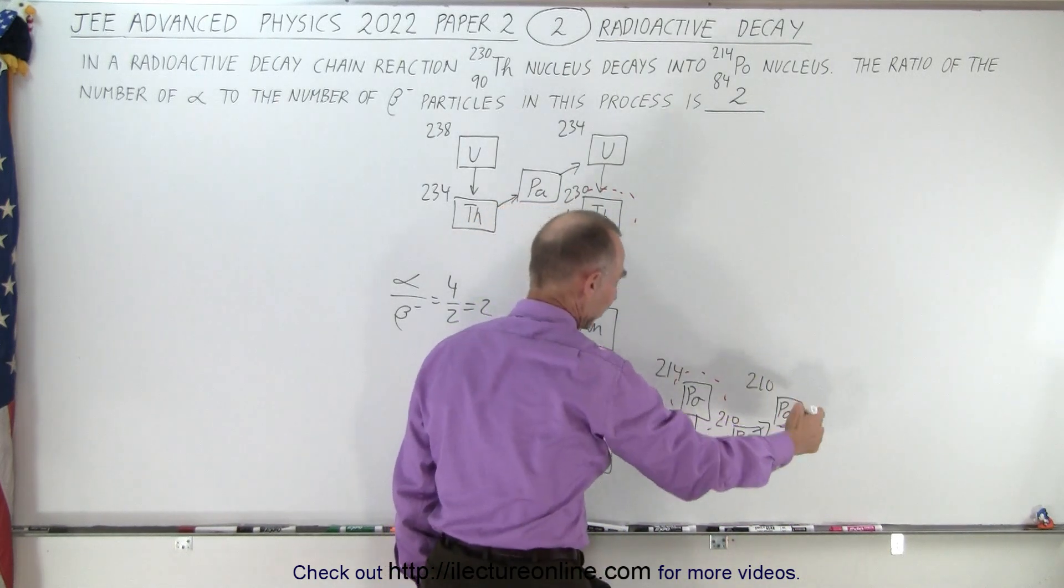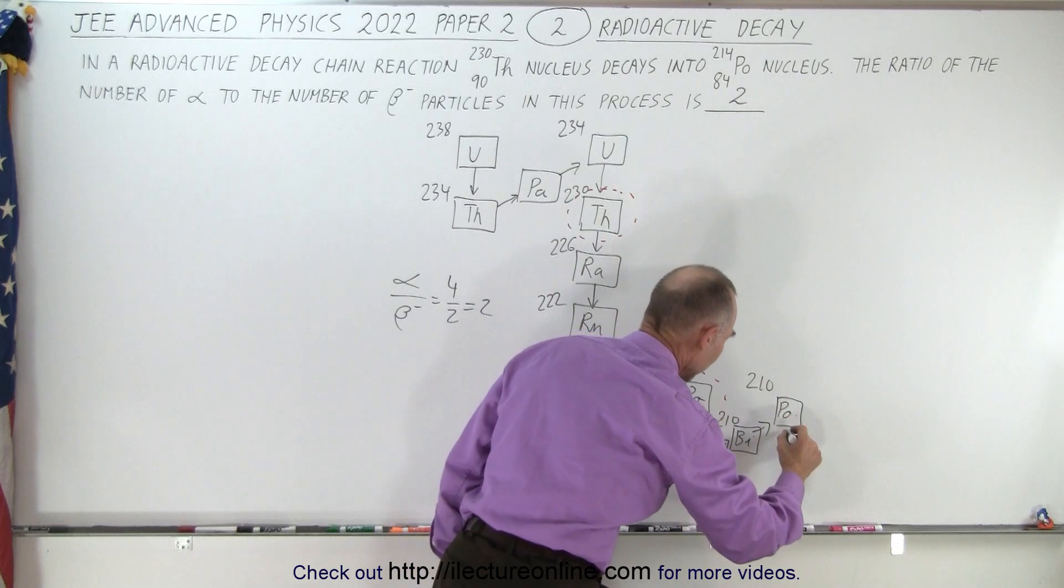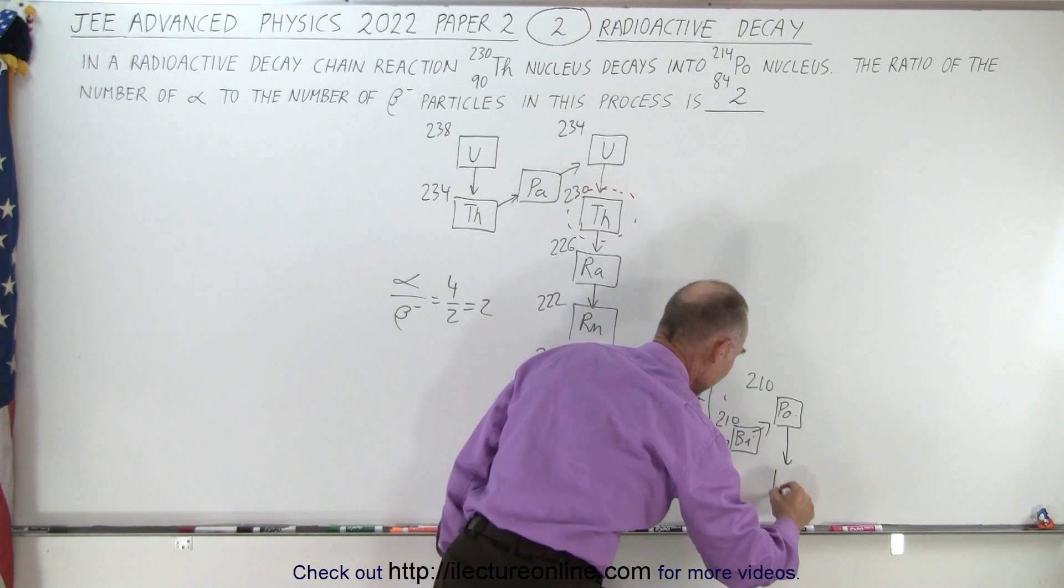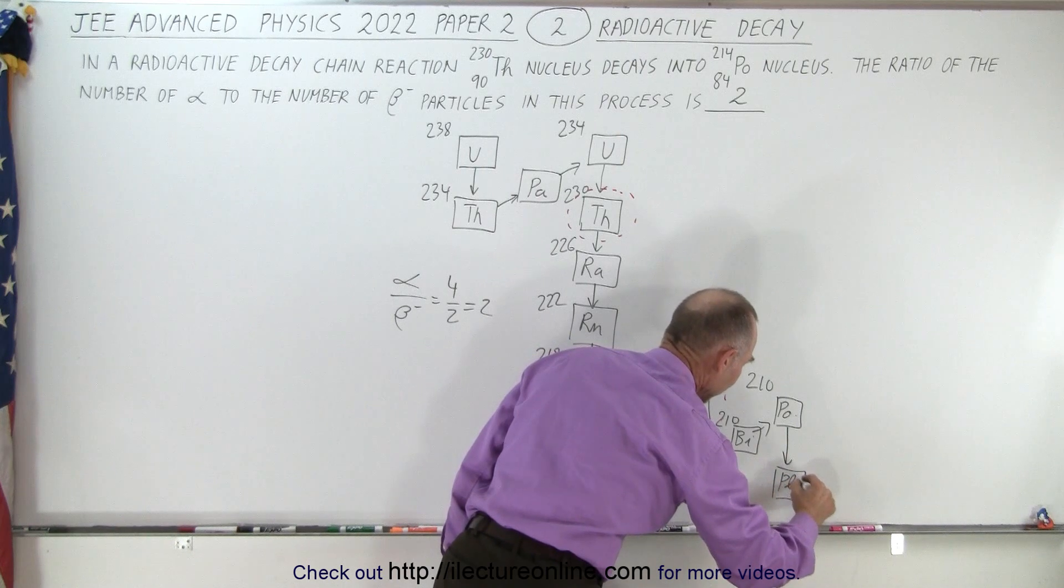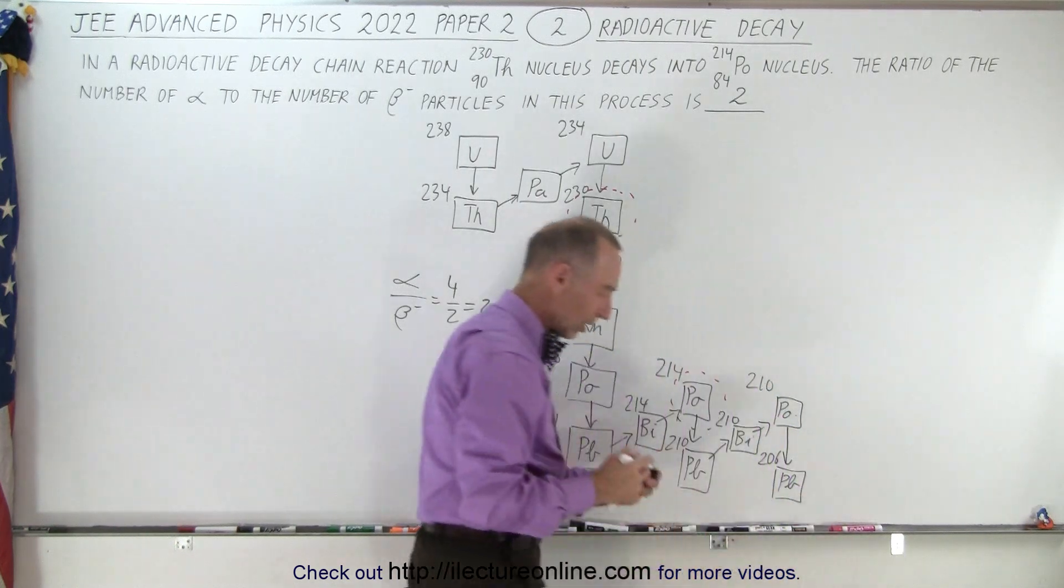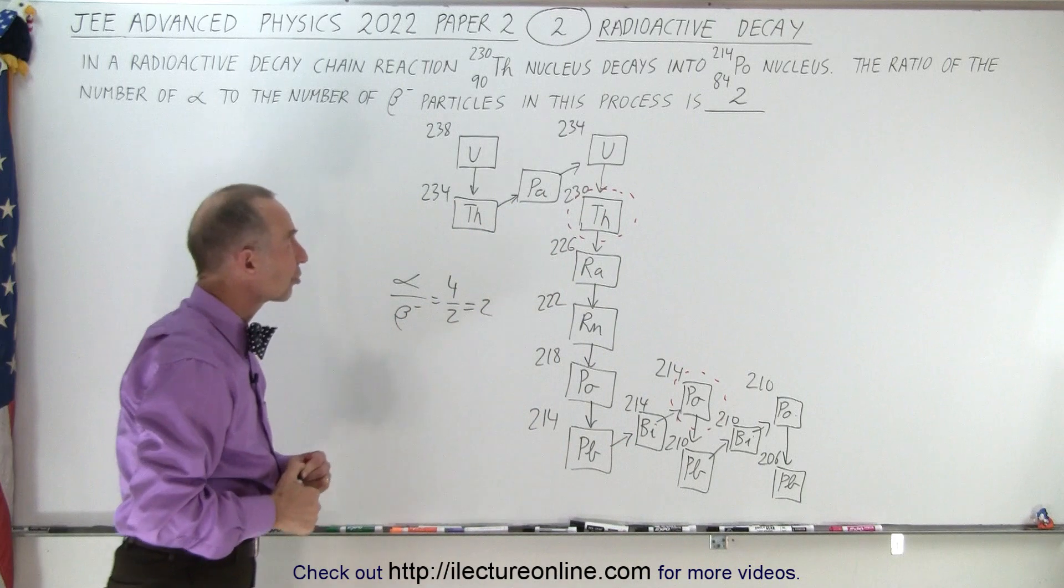And then we go back down to another alpha decay, back to lead, and this is lead-206, which is the end of that nuclear reaction chain.